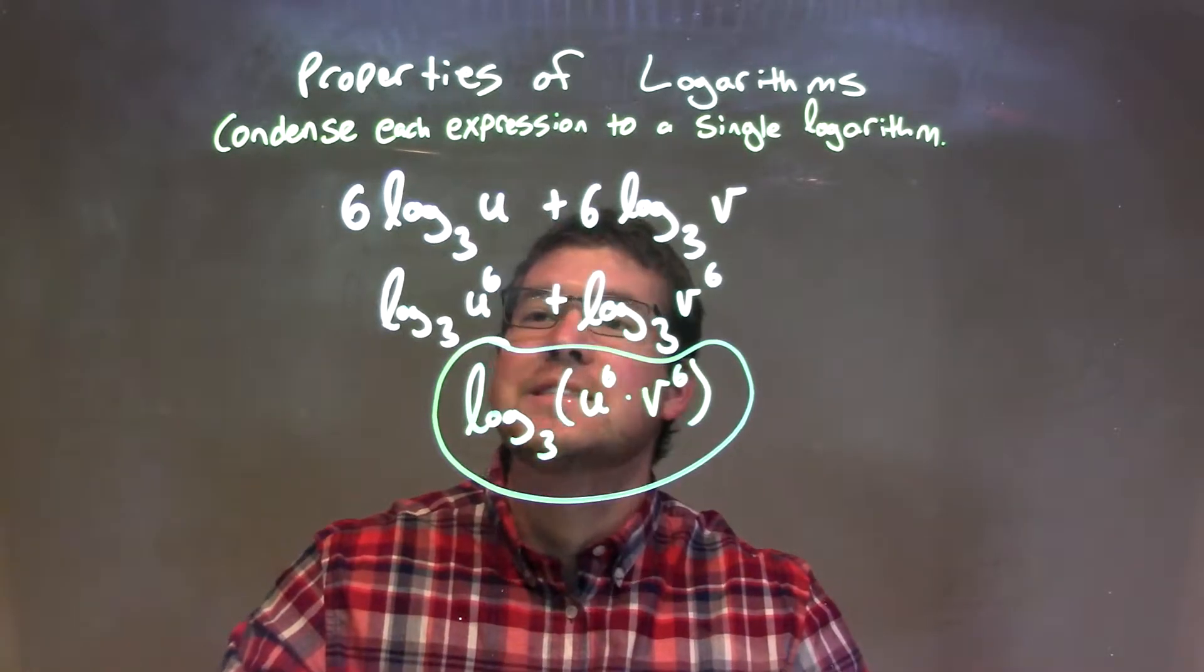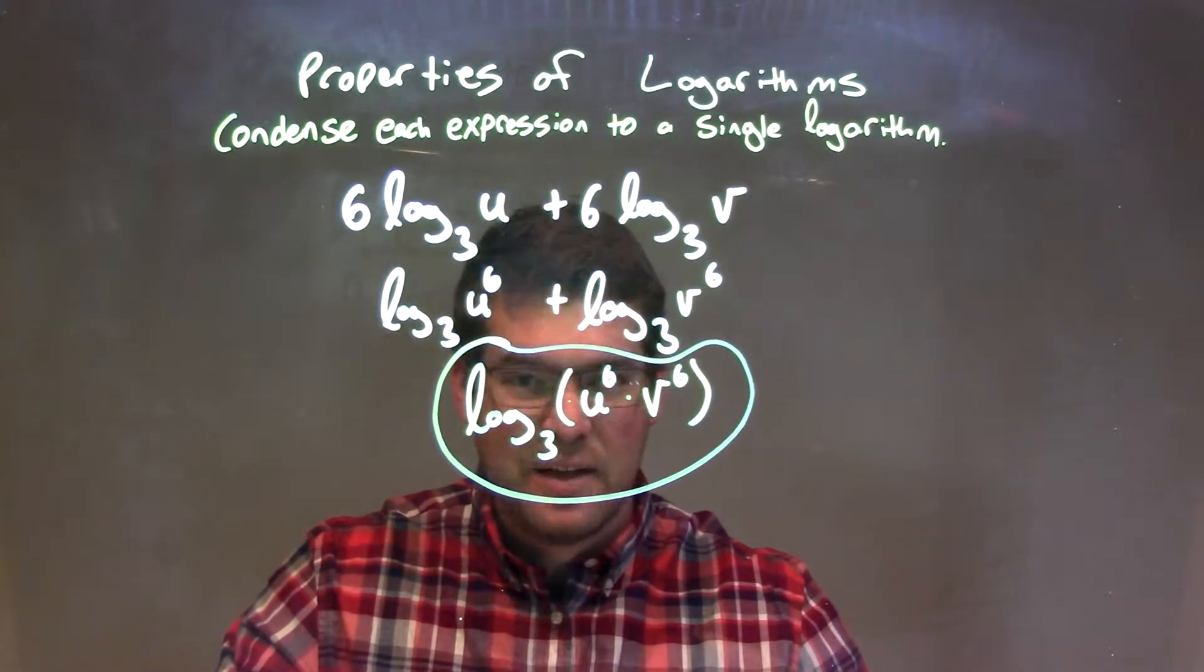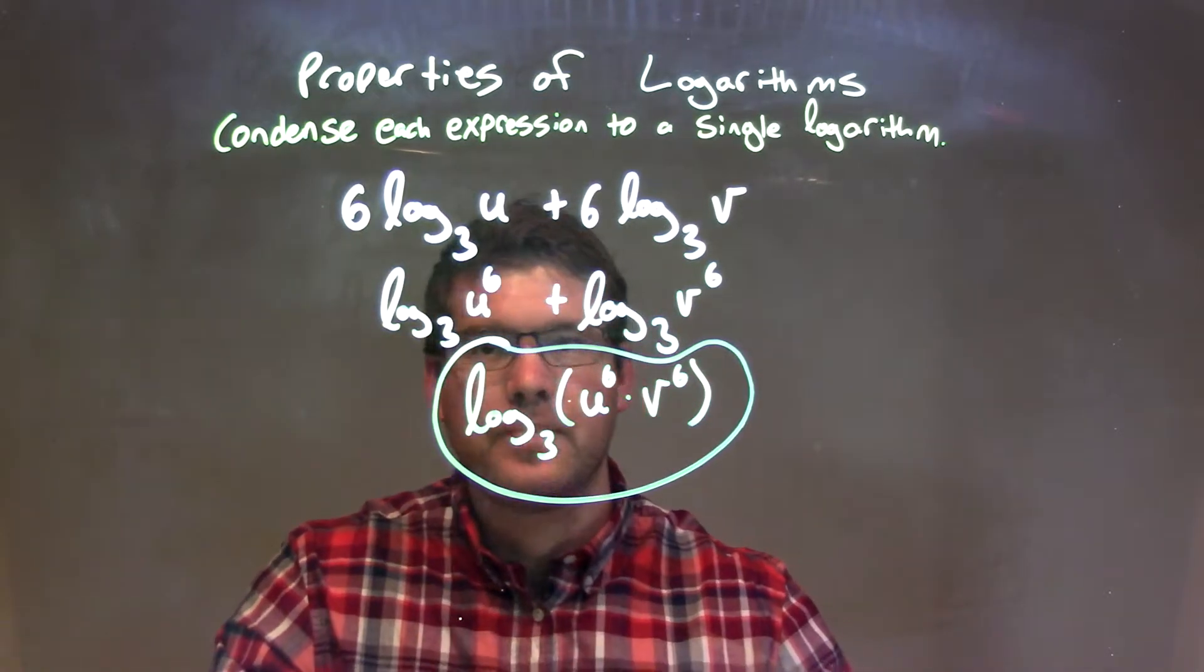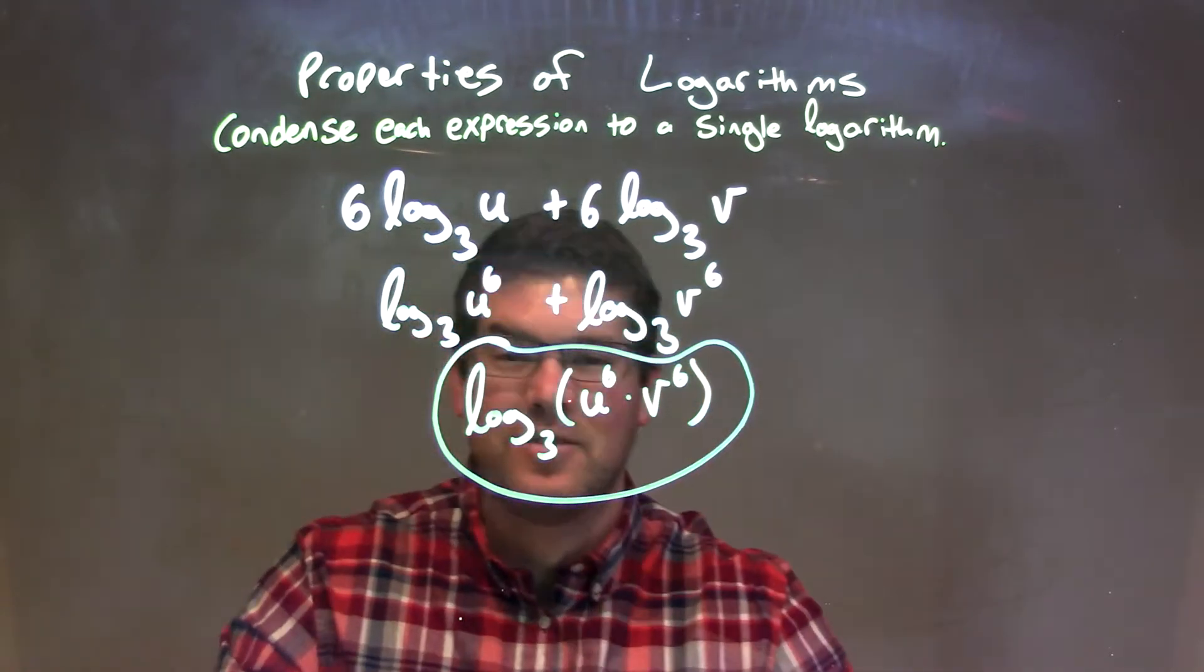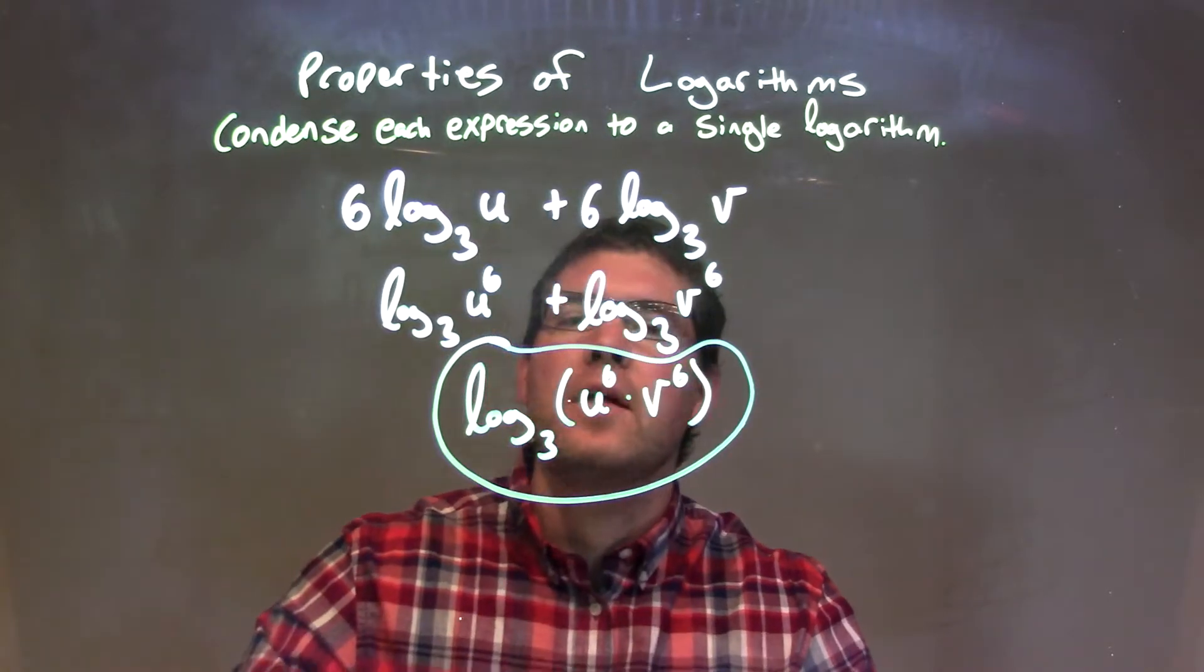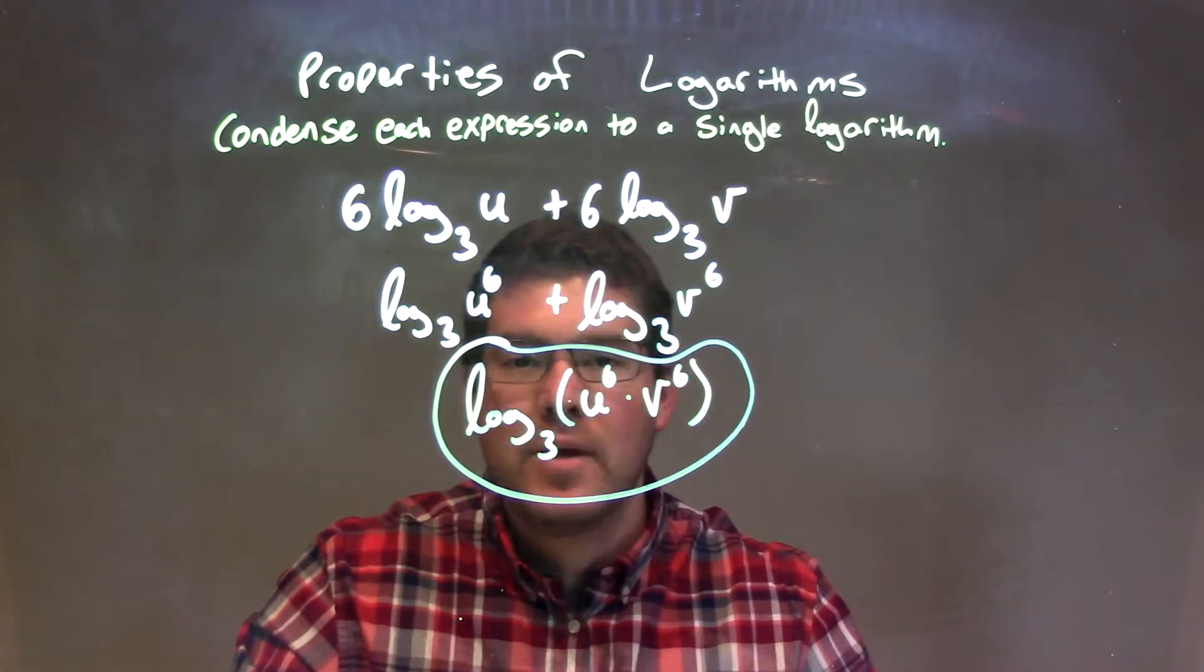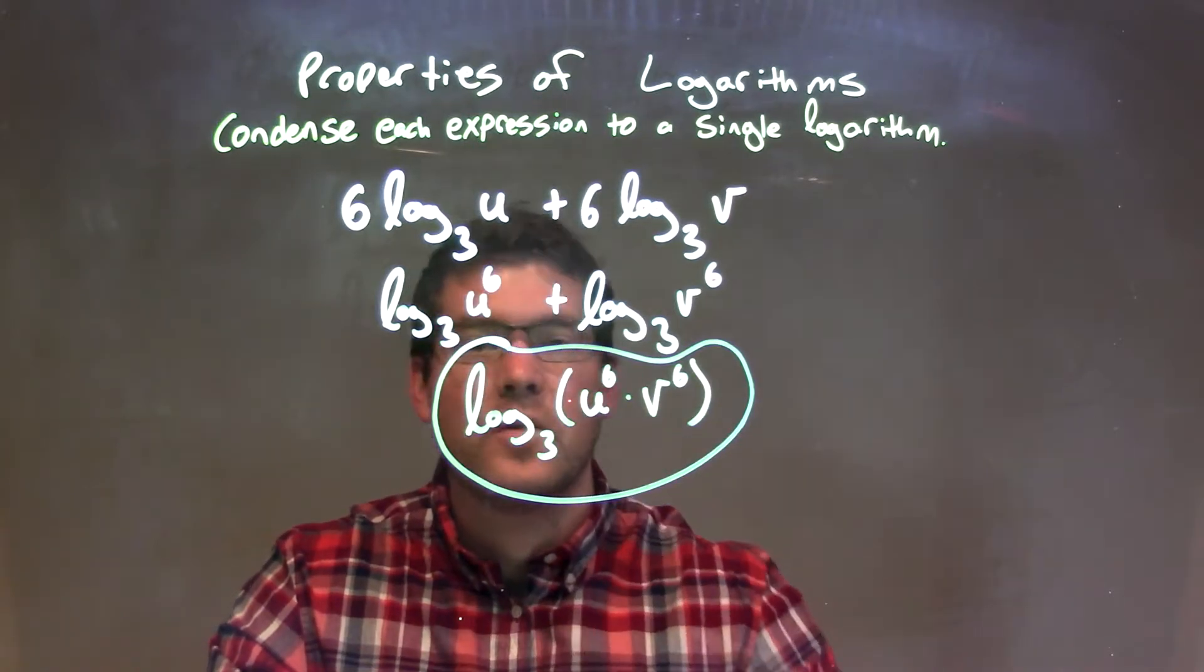So let's recap. We're given 6 log base 3 of u plus 6 log base 3 of v, and we want to condense this. First step is, both of them have a number 6 right out front. I wrote that as the exponent to each one of these variables. Then from there, we want to condense to be one big logarithm. They both have log base 3, so we can condense it. That addition becomes multiplication of just the variables here. And so again, our final answer here is just log base 3 of parentheses u to the 6th times v to the 6th.